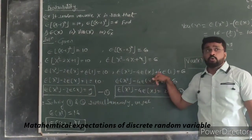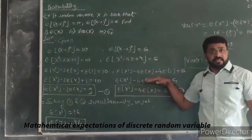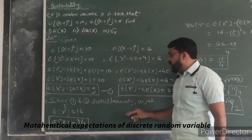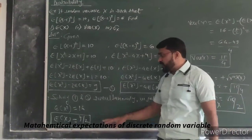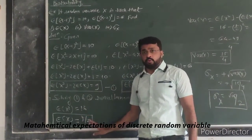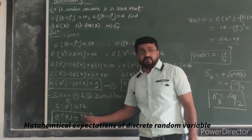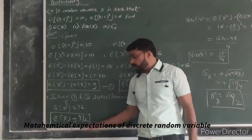Now we have these two equations, two simultaneous equations that can be solved simultaneously. So when we solve these two equations, we get the value of E(X²) and E(X), and that value is 16 and 7/2. So we got the value of E(X), that is 7/2.